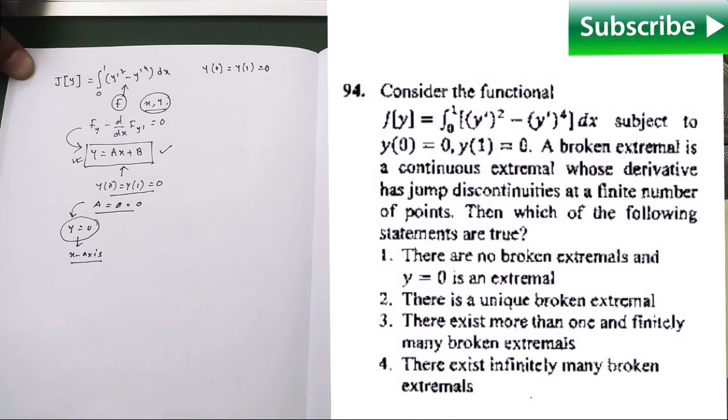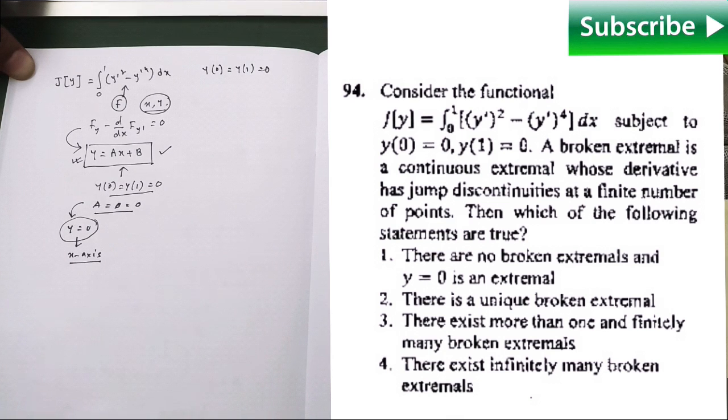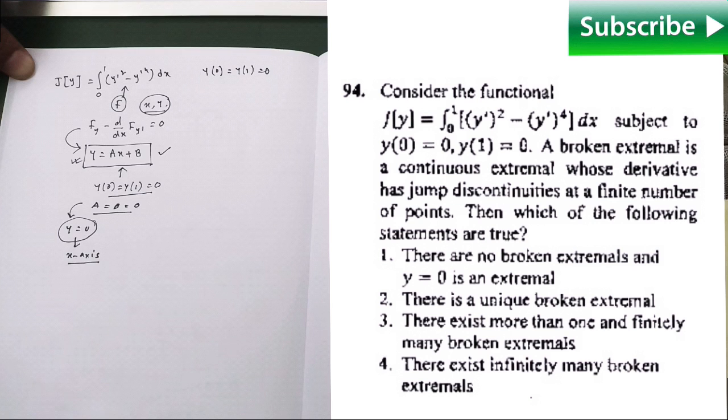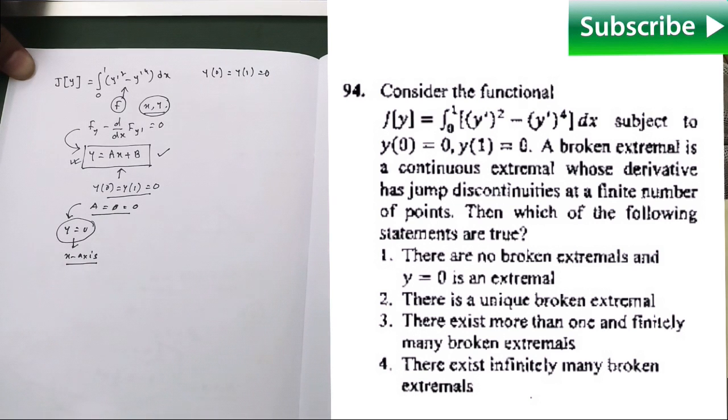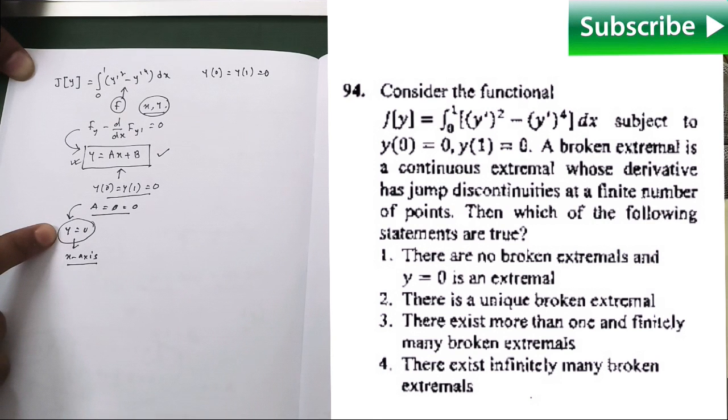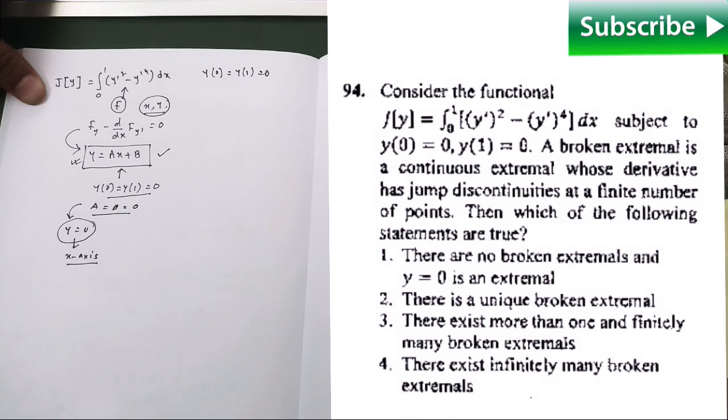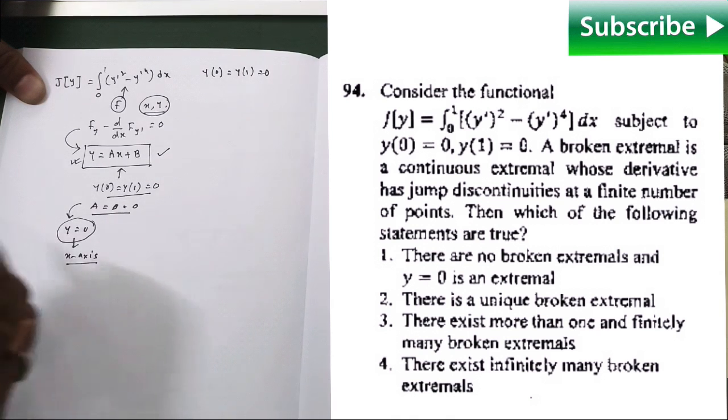But look at the condition carefully. In the extra condition, they have given us that a broken extremal, that means your extremal should be broken, but you are getting x-axis as your extremal from this point of view. That's why you can say this y equals 0 is never going to be your extremal because it is not satisfying the third condition given in our problem. That's why y equals 0 is never going to be your extremal and your first option is discarded.